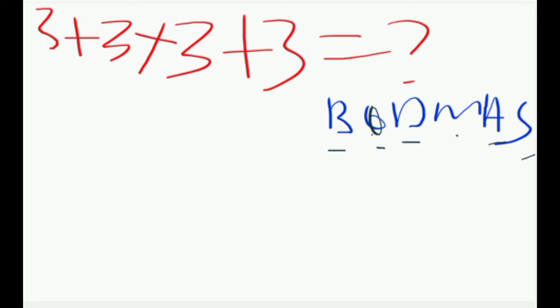If you want to solve this quiz using BODMAS, the first thing I'm going to do here is multiplication. So if you take three times three is nine, so the quiz will now be three plus nine plus three equals.